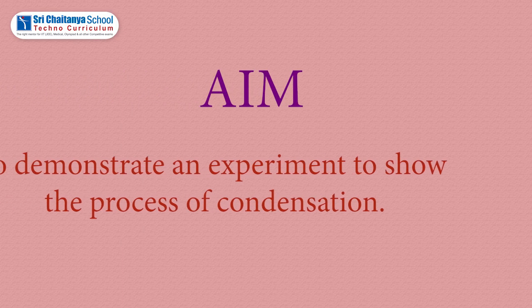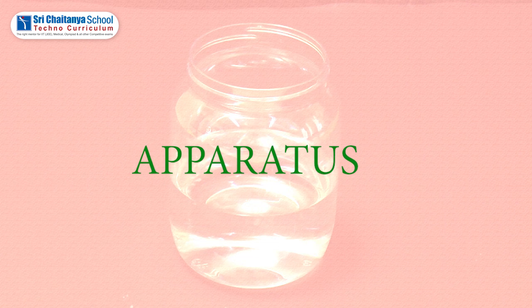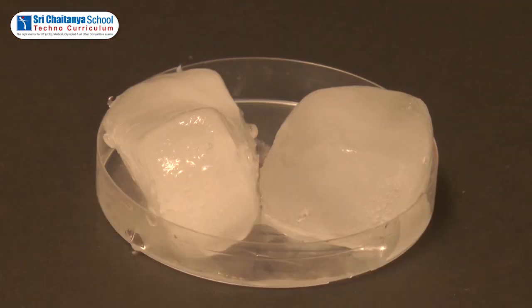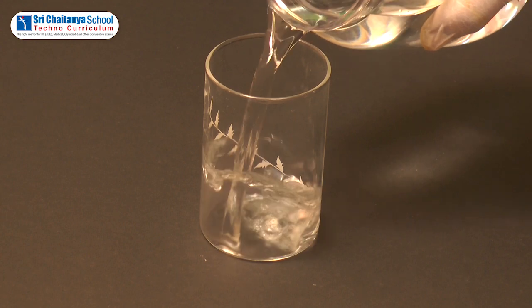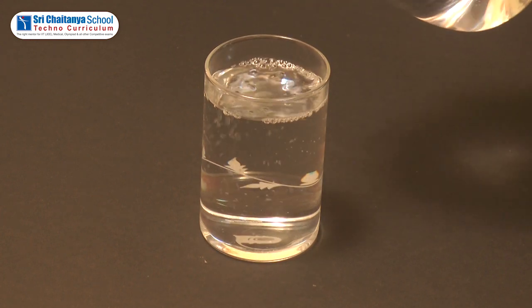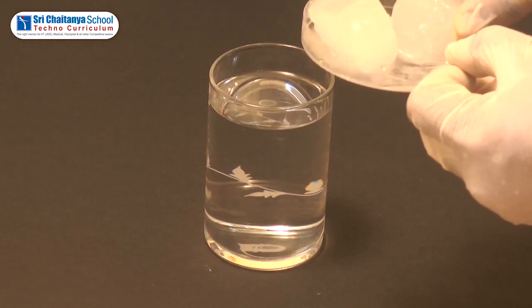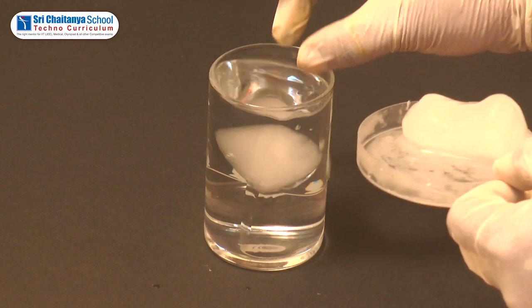To demonstrate an experiment to show the process of condensation. Apparatus required: water, a glass tumbler, and ice pieces. Take a glass tumbler and pour some water into it, then add some pieces of ice cubes into the glass tumbler.